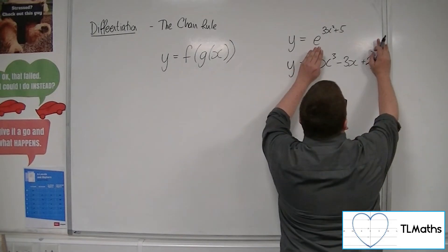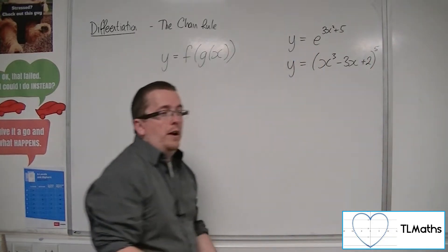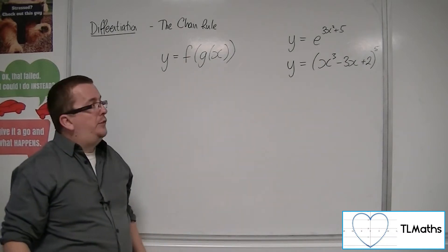Where we have x cubed minus 3x plus 2 within x to the 5 - the g of x within f of x.